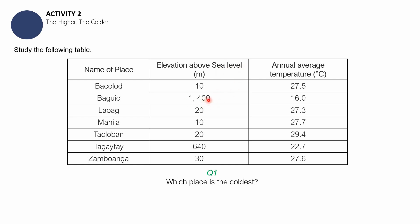Bacolod and Manila, sobrang baba ng elevation nila compared to Baguio City. Its annual average temperature is 16 degrees Celsius. The next question: the hottest place, obviously in this list, is Tacloban.